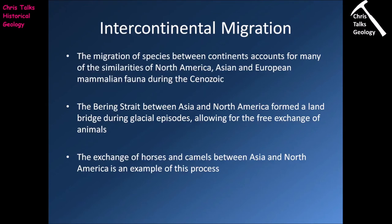One of the things we notice in the Cenozoic, especially the Pleistocene, is a lot of intercontinental migration. The migration of species between continents accounts for many similarities in North American, Asian, and European mammalian fauna during the Cenozoic. This was particularly true during the Pleistocene, when the ice age produced very low sea levels, allowing land bridges to form between pieces of continent. The classic example is the Bering Strait: during glacial episodes, seawater was locked up as glacial ice, dropping sea levels and literally allowing you to walk from Russia to Alaska, enabling a free exchange of animals such as horses and camels between Asia and North America.